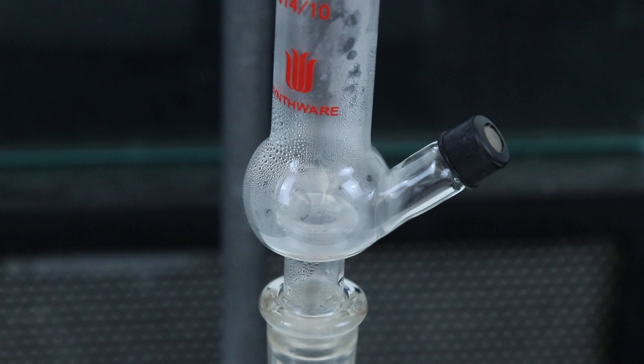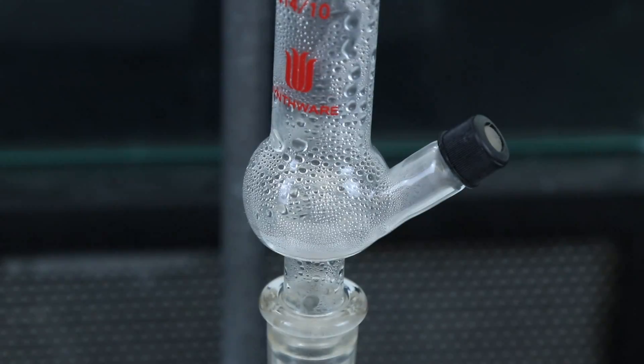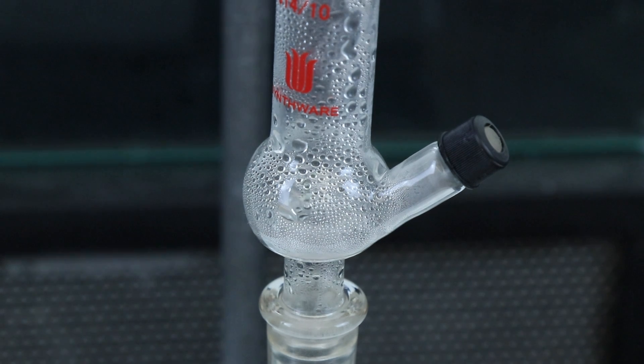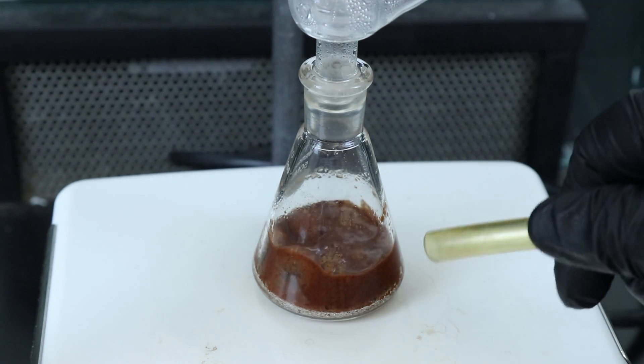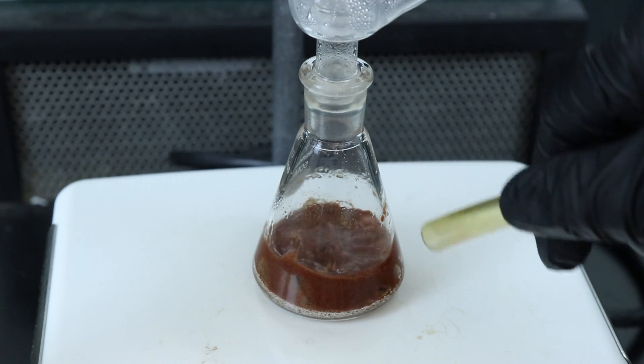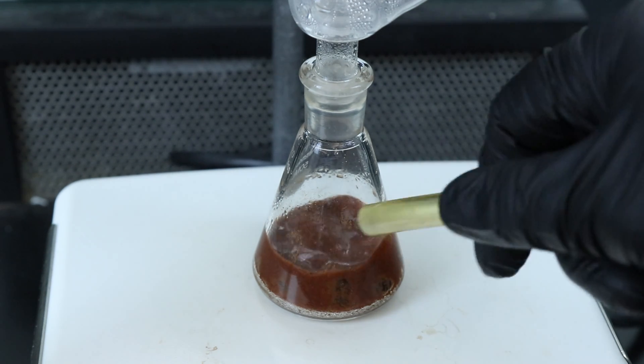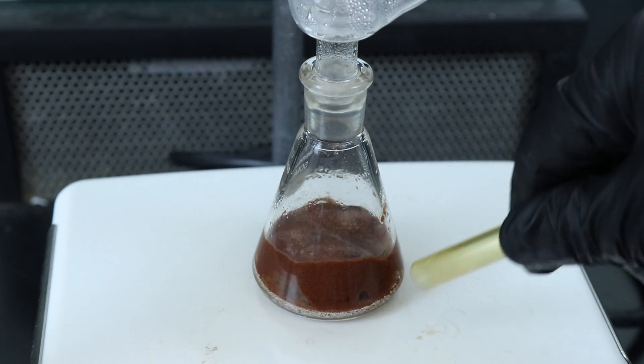Eventually the distillate will start to condense in the Hickman still and when the base fills up we can begin gathering it using a Pasteur pipette. Be careful to monitor the cinnamon because we don't want it boiling up into the Hickman still, so if it starts getting close a lot of air can be used to cool the flask down. Right now it's actually not an issue but I just wanted to show what to do if it did start boiling too violently.